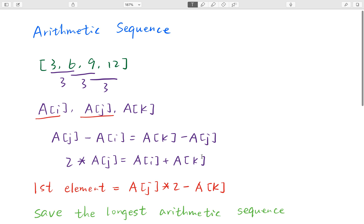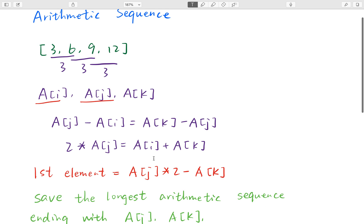So in that case, if we have two elements, which is A[j] and A[k], we can quickly get the first element, which is 2 times A[j] minus A[k], right?